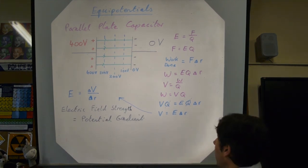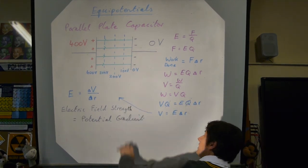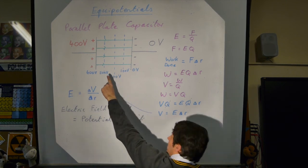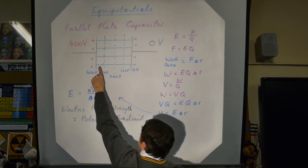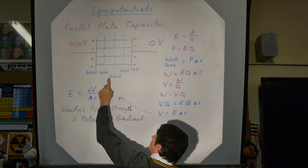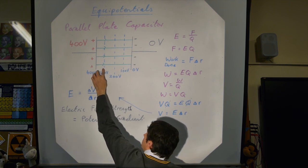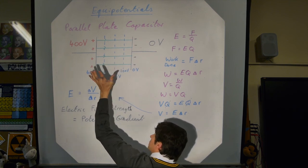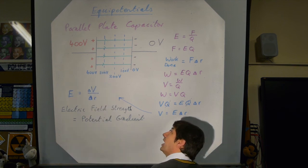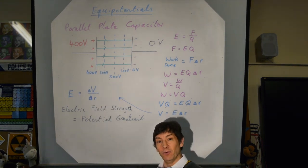You can visualise this by putting a positive charge here and imagining it rolling downhill — the equipotentials are like contour lines. They're evenly spaced here, confirming a uniform field.